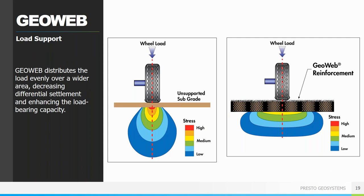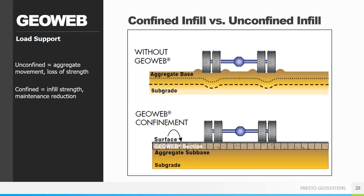Here you can see the stresses on the subgrade with the unsupported subgrade on the left and GeoWeb reinforcement on the right. Notice there is a complete elimination of the highest stresses at the surface when using GeoWeb reinforcement. The stresses are reduced and distributed over a wider area — what we call the mattress effect — which reduces stresses reaching the subgrade and leads to a significant decrease in deflection and rutting. With unconfined aggregate, material moves down and out, leading to maintenance issues. By adding GeoWeb, we greatly reduce maintenance through confinement and add apparent cohesion to the infill, allowing us to reduce section depth.